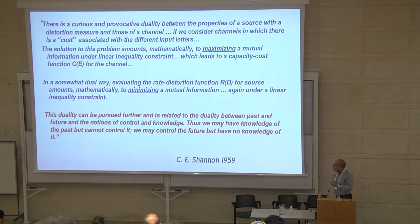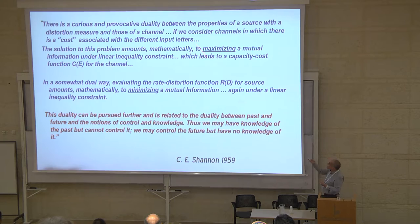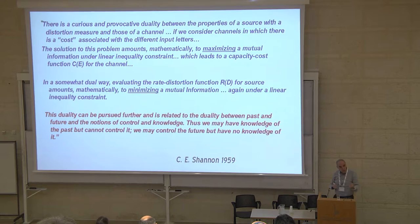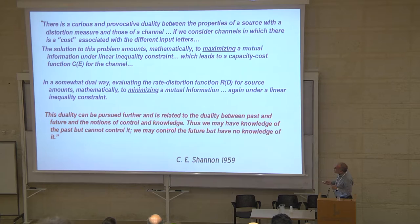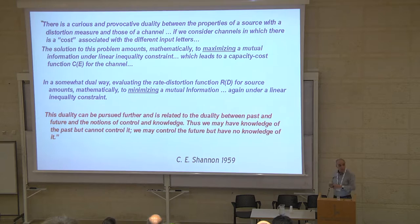Shannon was well aware of this at the end of his most important 1959 paper, where he realized these two questions — source coding with distortion and capacity with cost — are dual to each other. In one case, we minimize information; in the other, we maximize it. At the end of the paper he wrote something very inspiring: 'This duality should be pursued further, because they are closely linked to the connection between control and knowledge. We can control the future but have no knowledge of it. We know the past but have no control of it.'